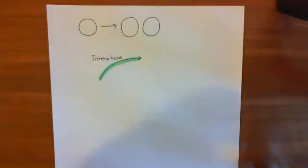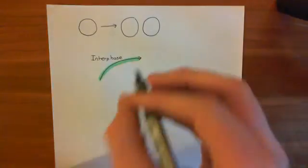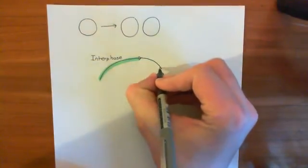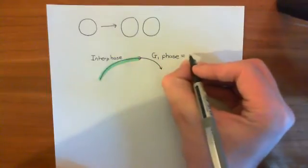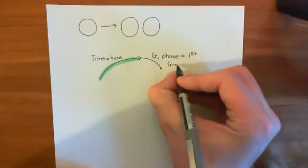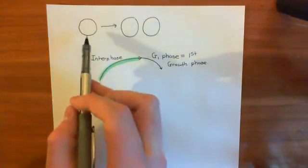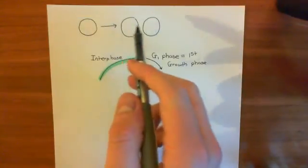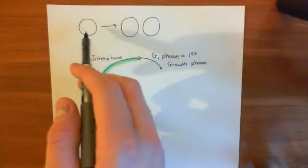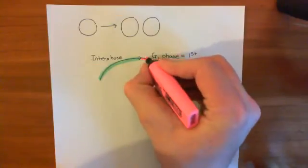If you want to get the cell to actually begin the process of division, you have to begin what's known as the G1 phase — the first growth phase, also referred to as the gap 1 phase. This is the phase where you produce a huge number of proteins. If you're going to go from being one cell to two cells, you need to basically double the amount of protein you have, because everything needs to be copied for both daughter cells to be functional.